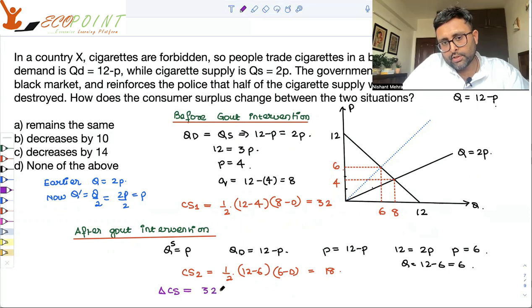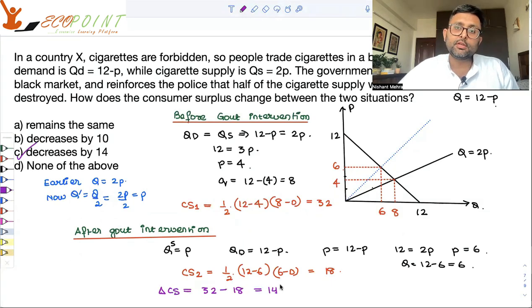Earlier it was 32, now it is 18, so it is 14. This has decreased by the amount of 14. So this was about consumer surplus.